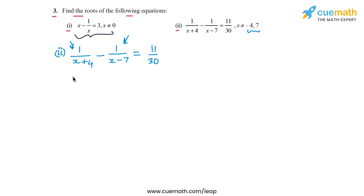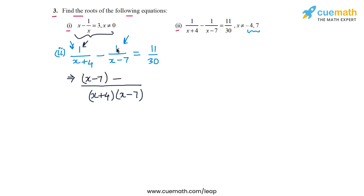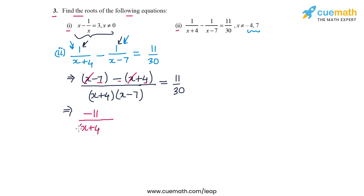Taking the LCM of the denominators on the left hand side, we get (x+4)(x-7) in the denominator. The numerator becomes (x-7) minus (x+4). Simplifying, the x terms cancel out, leaving -7 - 4 = -11, so we have -11 / [(x+4)(x-7)] = 11/30.